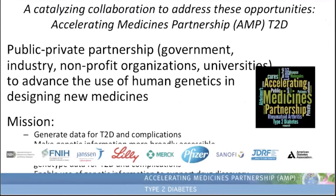We're very lucky that this collaboration is catalyzed by support from the Accelerated Medicines Partnership for Type 2 Diabetes, a public-private partnership between the NIH and five pharmaceutical companies. Its goal is simply to use human genetics data to advance new medicines — specifically to generate data for types of diabetes and its complications, to make this data accessible, and finally to create a knowledge portal: a platform to make accessible the phenotype and genotype data relevant to diabetes and its complications.